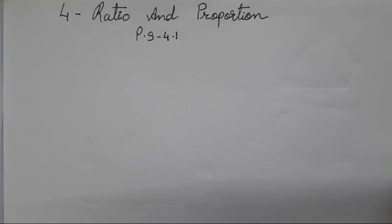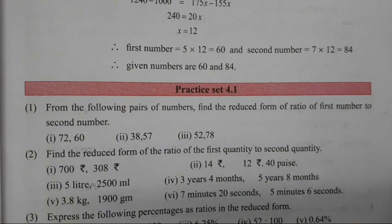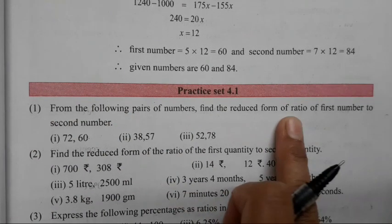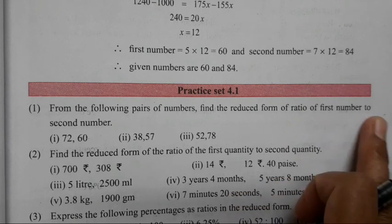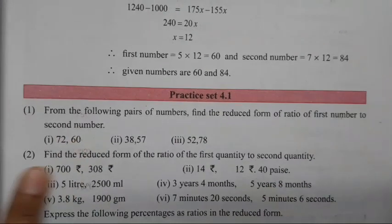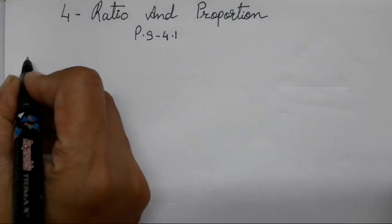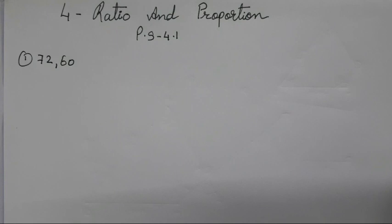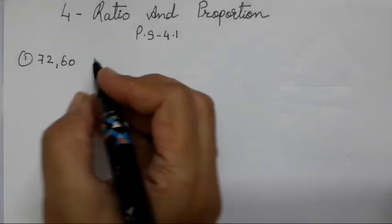Hello everyone, welcome back to my channel. Today we are going to study Chapter 4, Ratio and Proportion, Practice Set 4.1. We will be completing it in today's video, so on page number 61 you all can follow the questions. I am only going to solve them. The first question is: from the following pairs of numbers, find the reduced form of ratio of first number to second number. You all have to find the ratio using a simple reduction method. So 72 and 60.